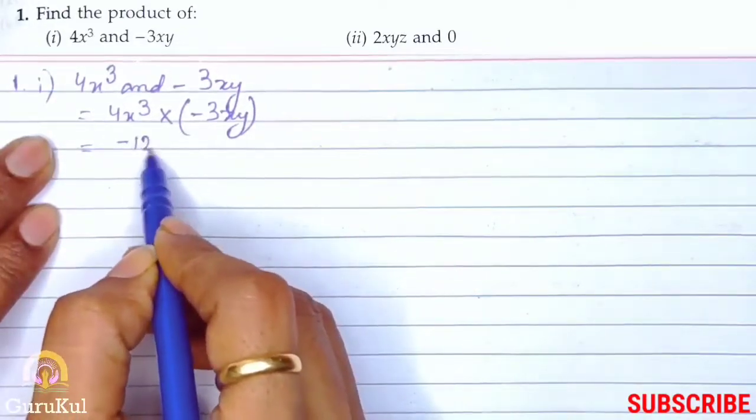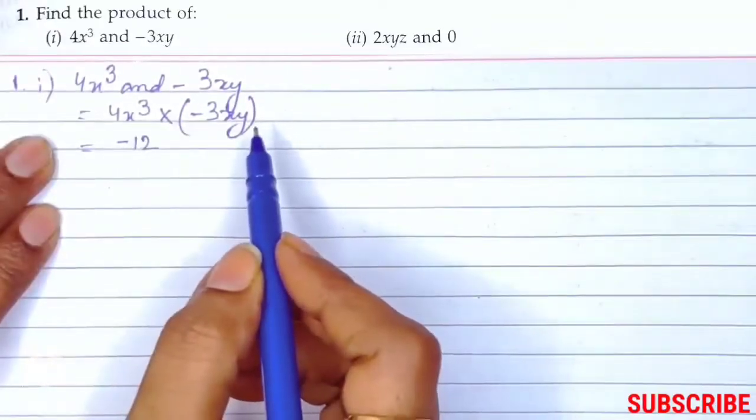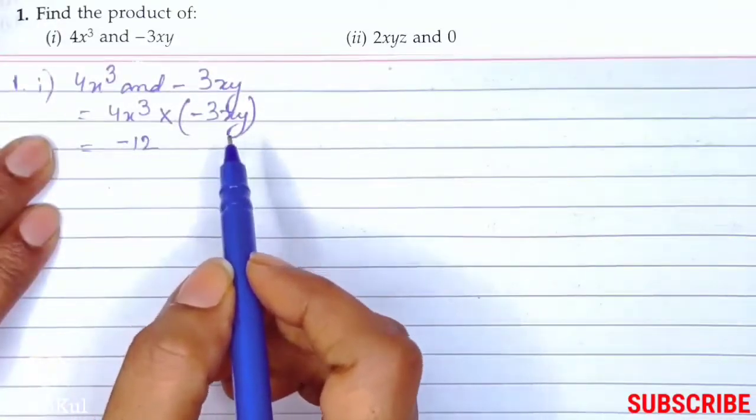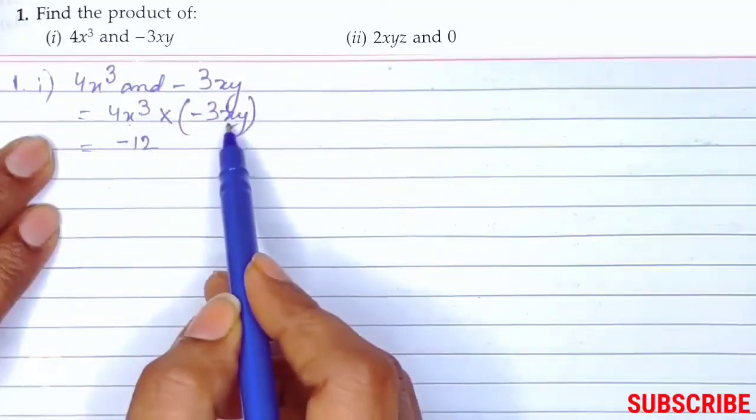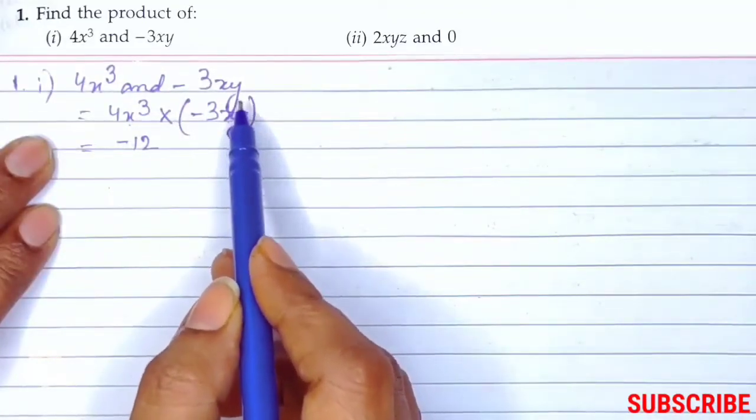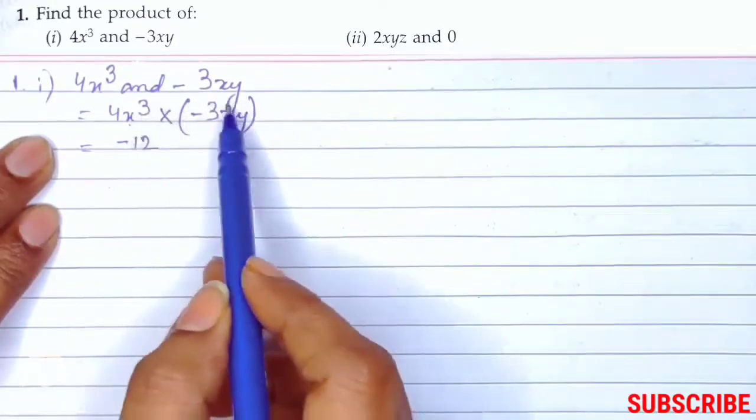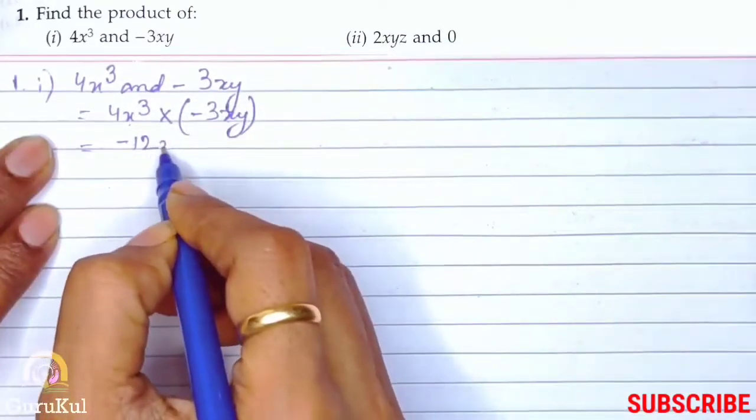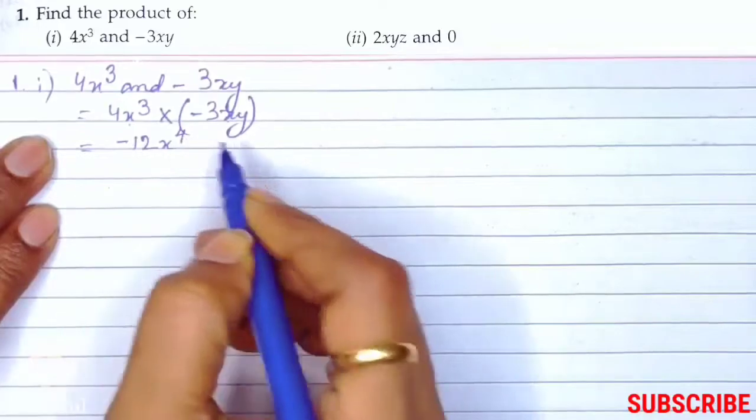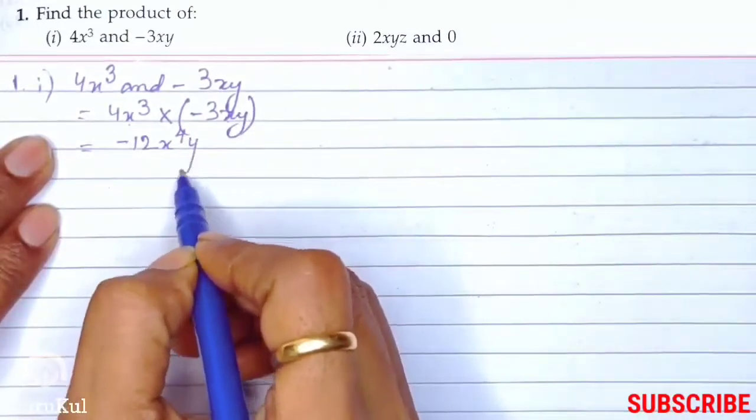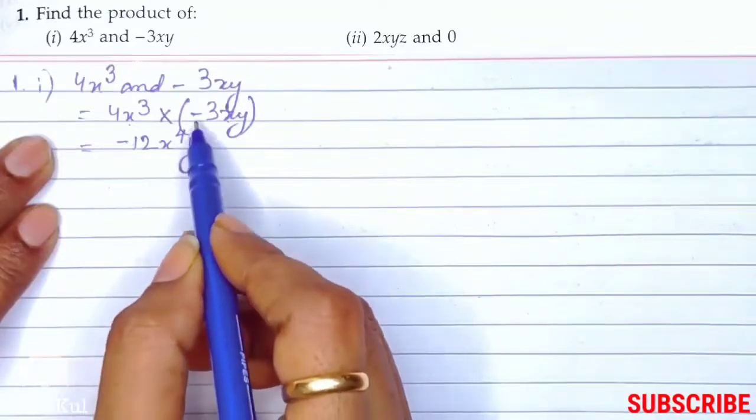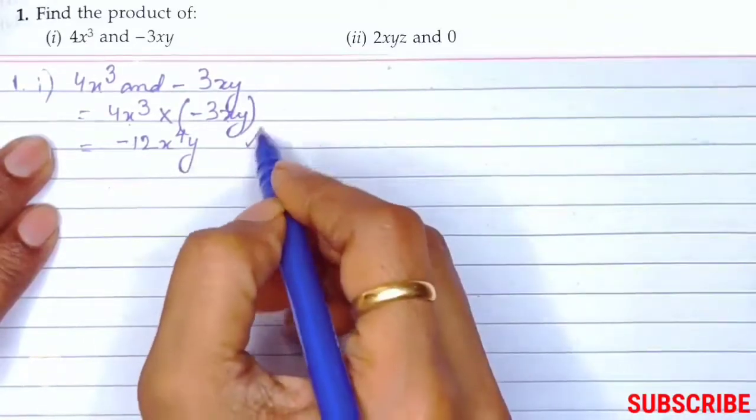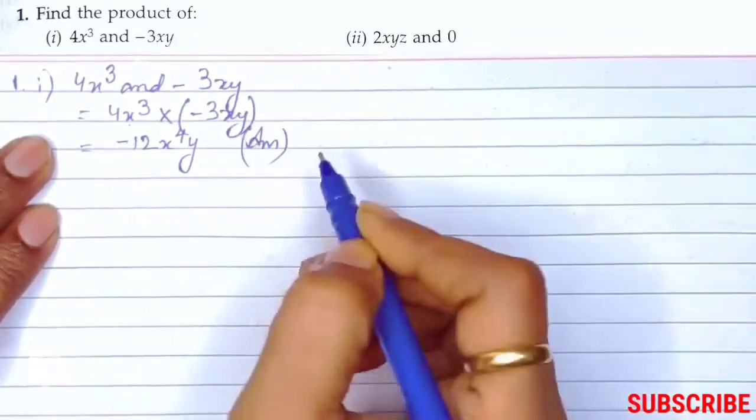4 times 3 is 12. What do we do with powers? We add the powers. This is x to the power 3, here x is 1. So 3 plus 1 will give us x to the power 4, and y is only one time. So the final answer is minus 12x to the power 4y. This is how we do the multiplication.